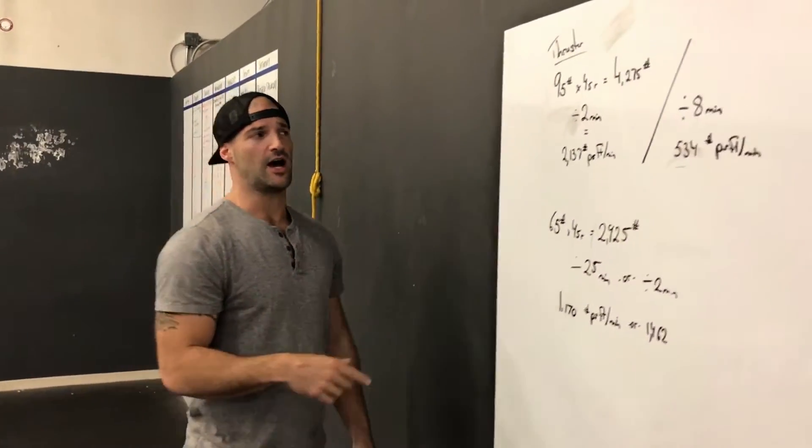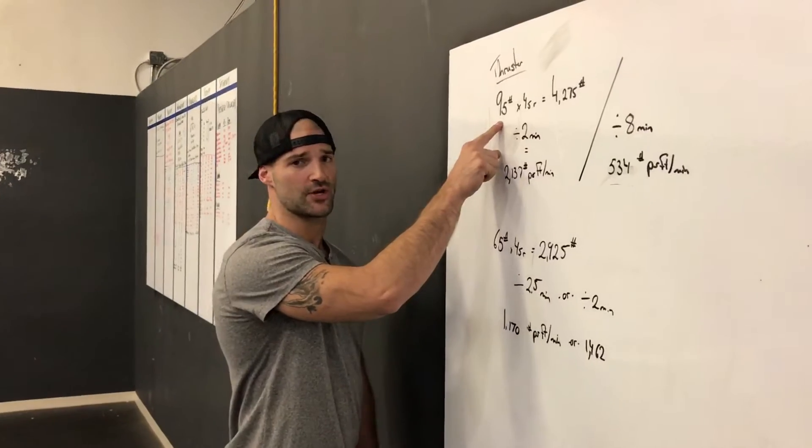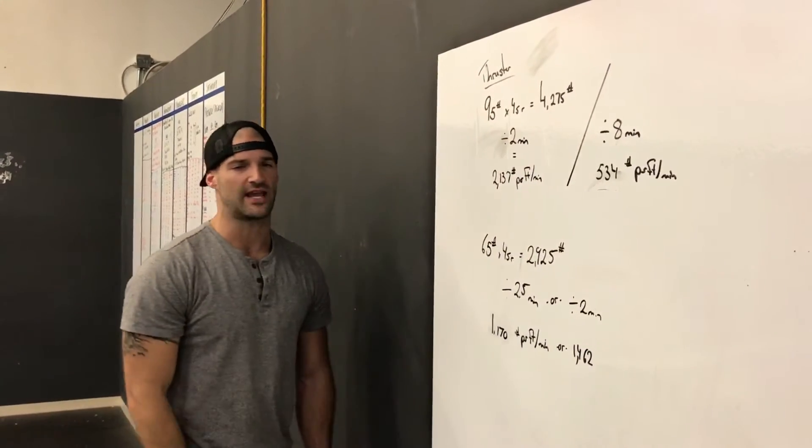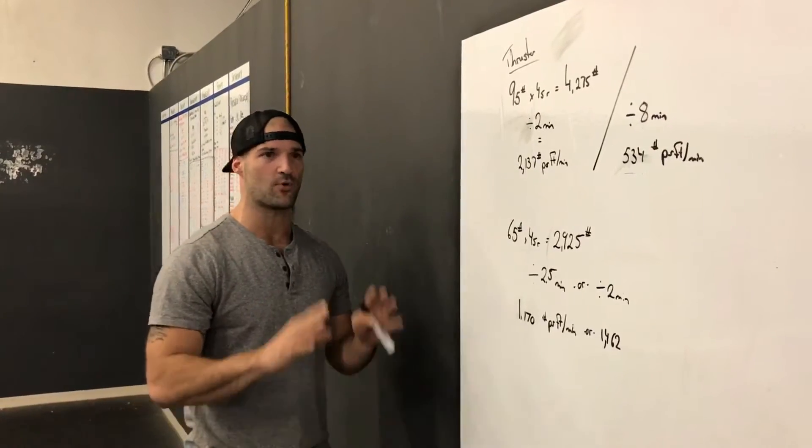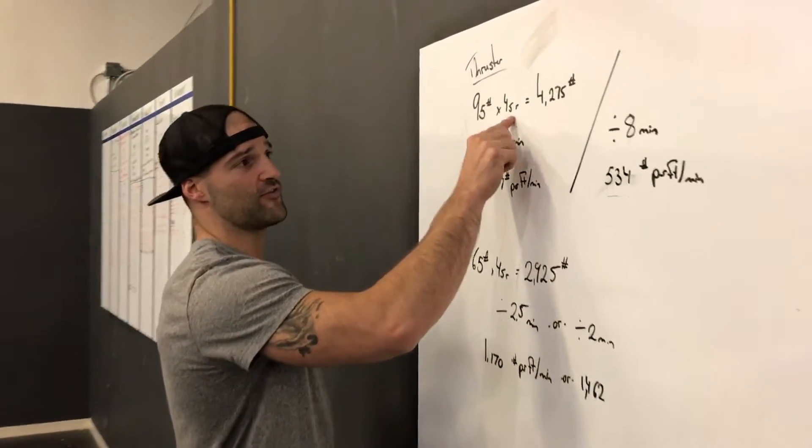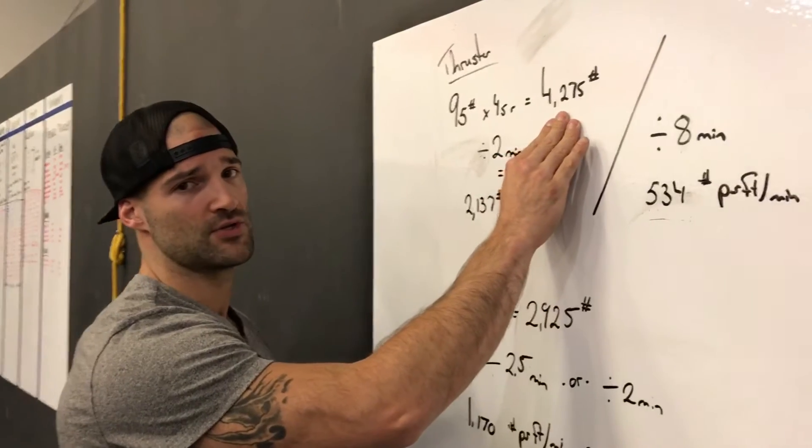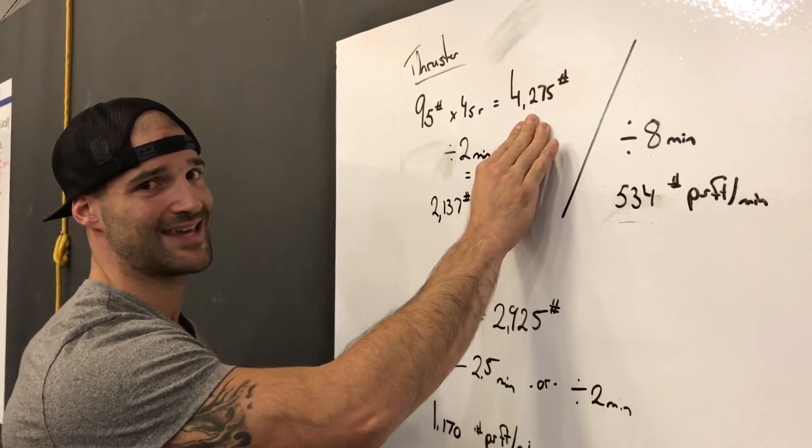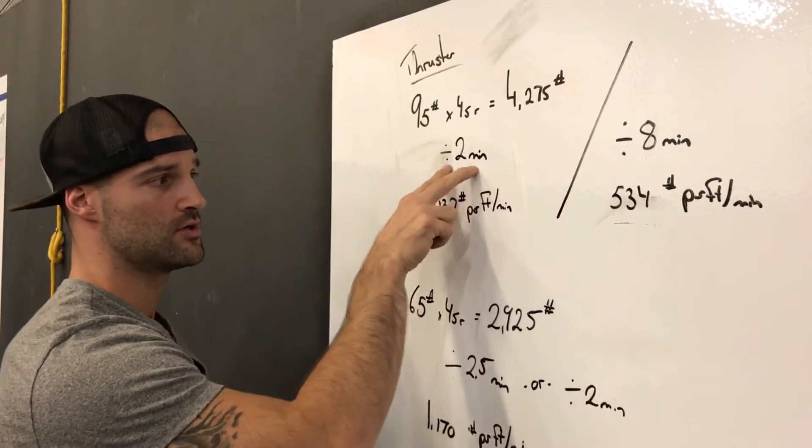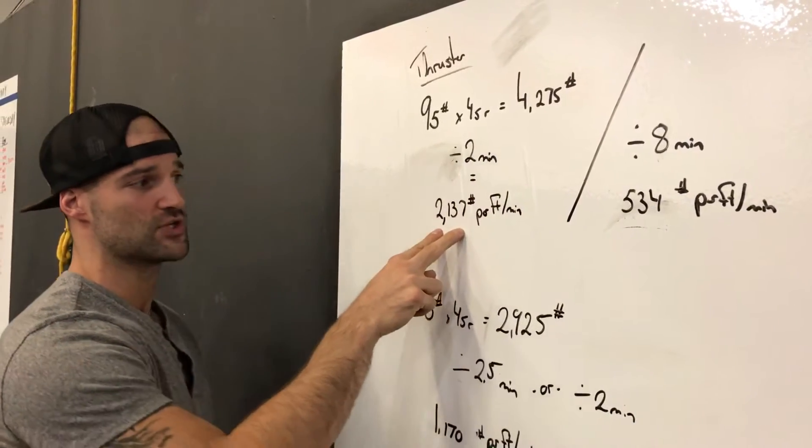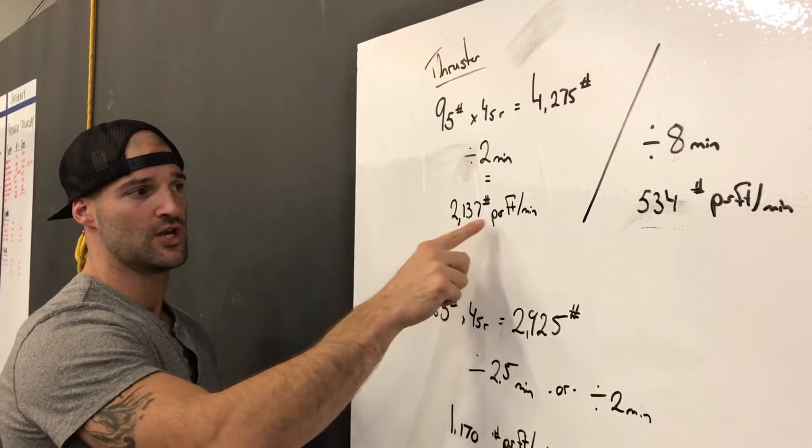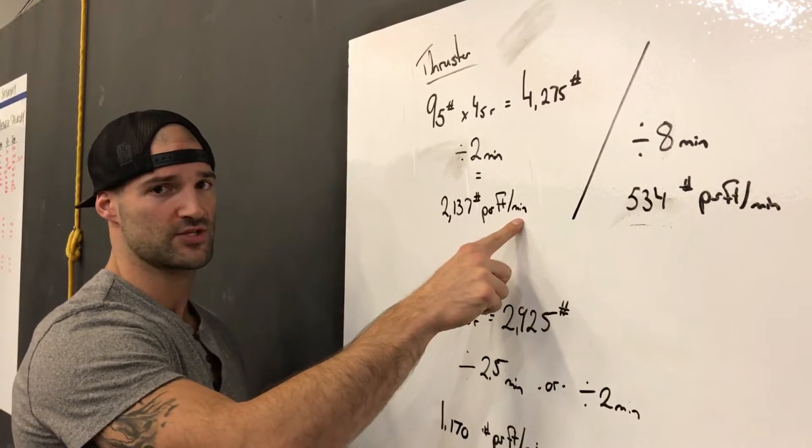Now let's say I'm doing a 95 pound thruster. I'm doing 45 reps and we're gonna say that I'm just moving the weight one foot per rep. And I know I'm moving it more than that but we're gonna keep it simple, right? Over the course of those 45 reps I moved 4,275 pounds. Now let's say that took me two minutes to do. Two minutes to do those 45 reps. What I have here is I moved 2,137 pounds per foot per minute. So pretty simple.